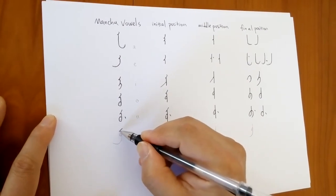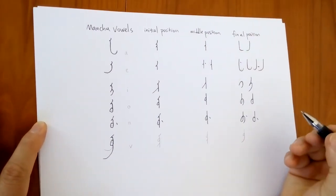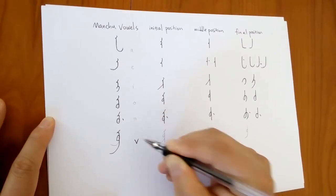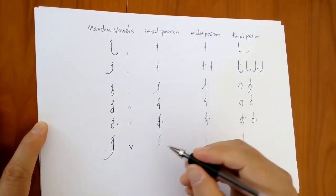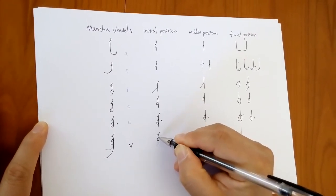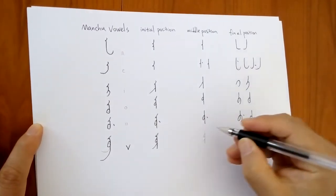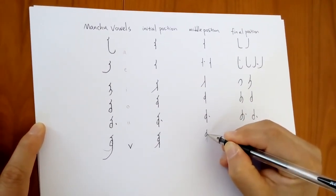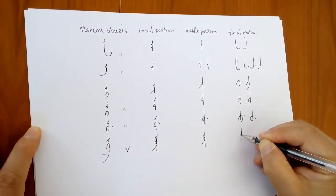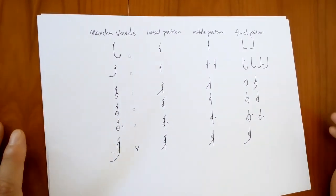The last one is W. This is W. It's indicated as V in the Roman alphabetical letter, but it pronounces W. This is W in the beginning, this is W in the middle, and this is W at the end. Okay, that's all. Thank you.